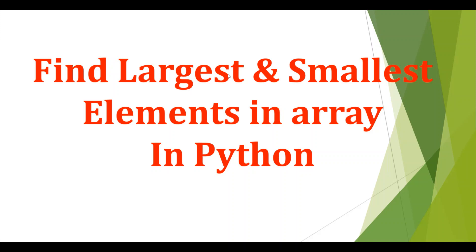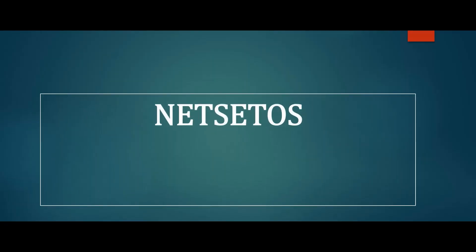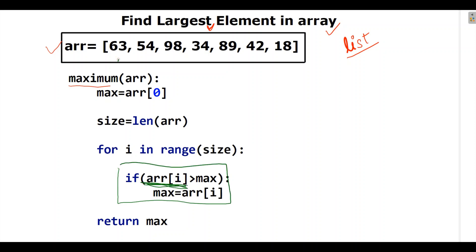Welcome to NetSet OS. Today we will discuss finding the largest and smallest element in an array in Python. First, we will discuss finding the largest element in an array — or list, as it is called in Python. We have taken an array and need to find the largest or max element. This program works on an if condition where we iteratively check for the max element throughout the array, and whenever we find it, we store it in the max variable.